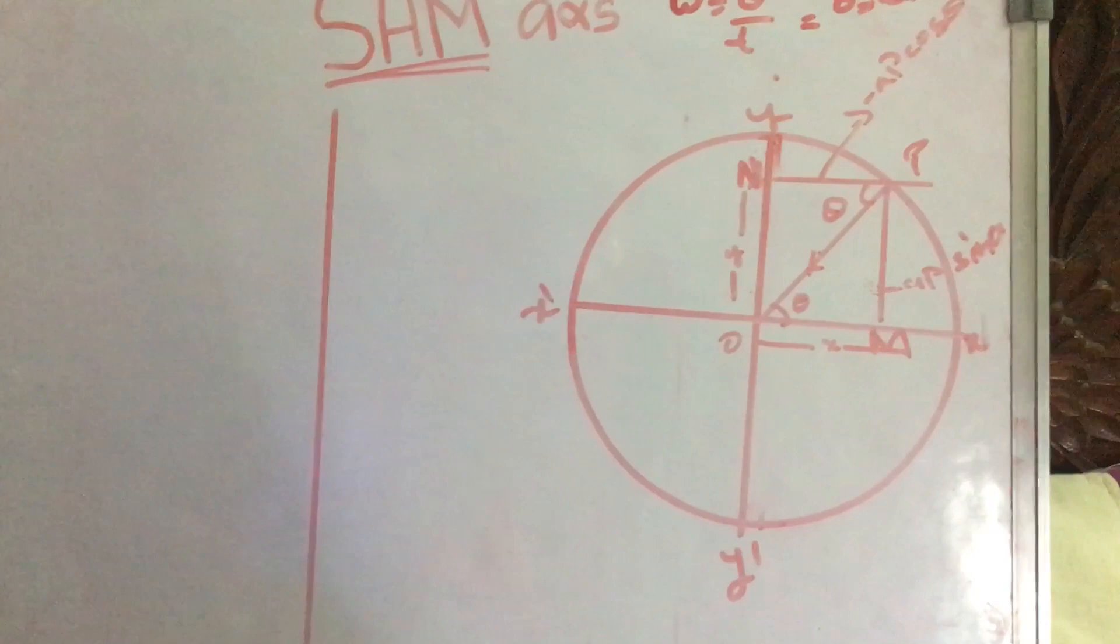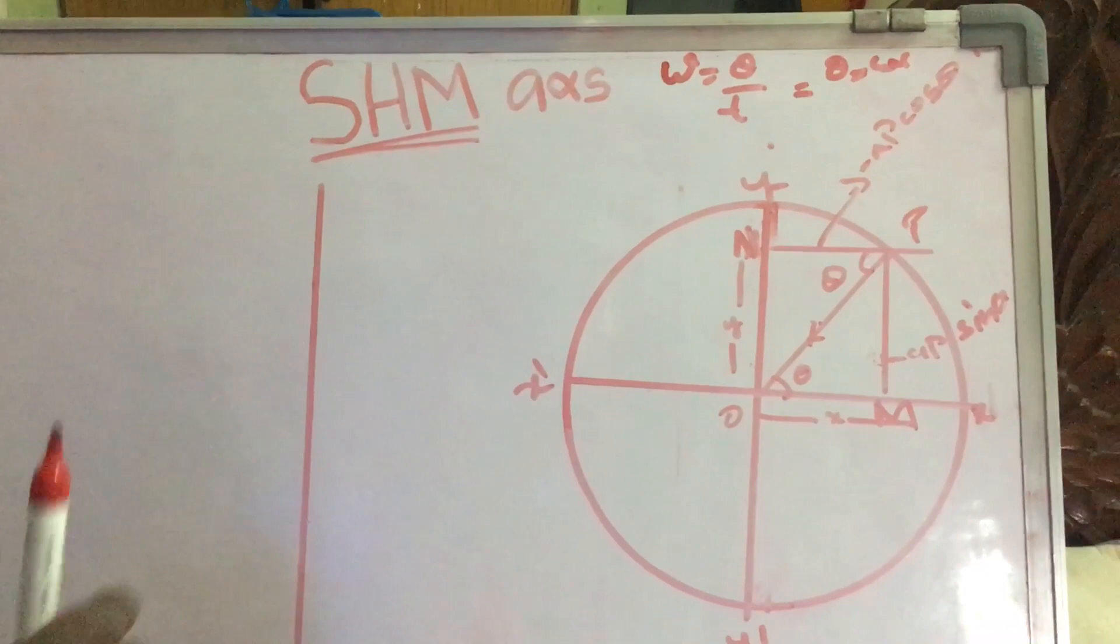SHM means simple harmonic motion. Acceleration is directly proportional to displacement. We have taken a circle and we have drawn two lines.